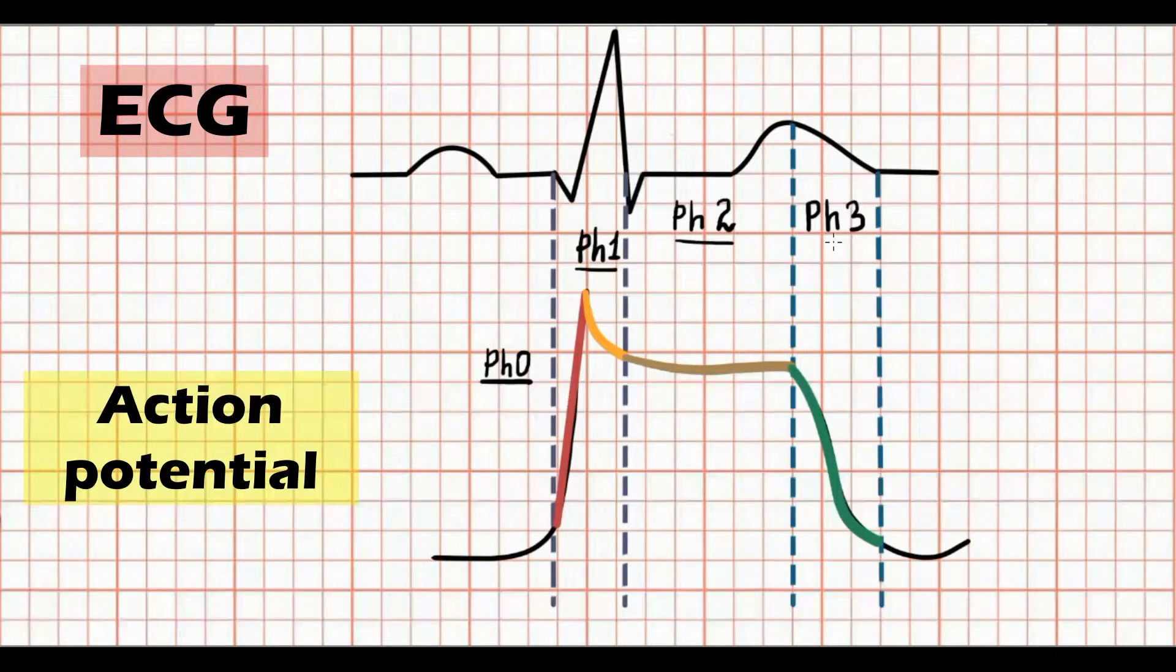The duration of action potential, and therefore the duration of QT, is most affected by alternations in phases 2 and 3.